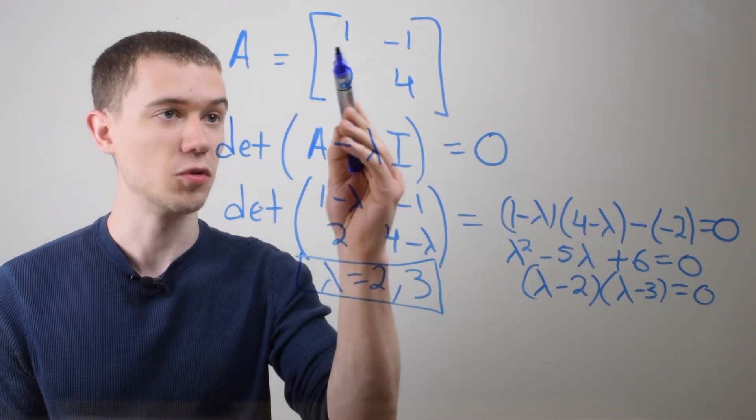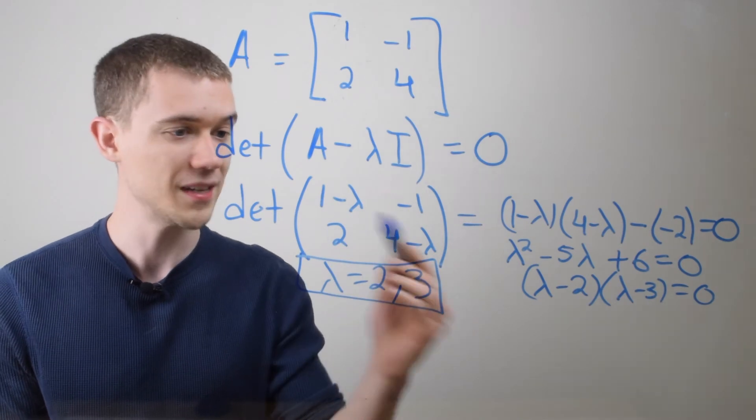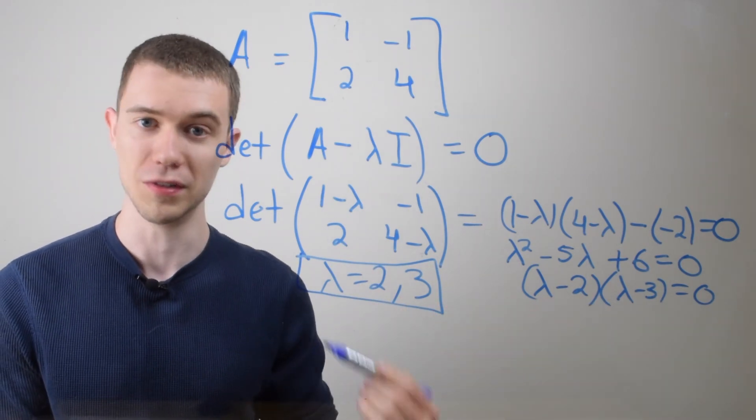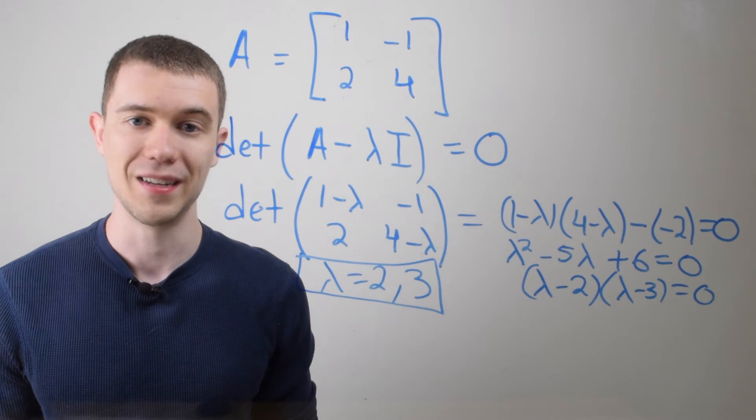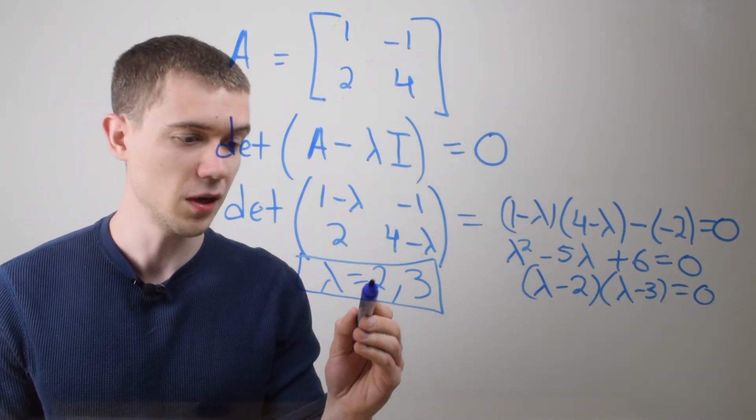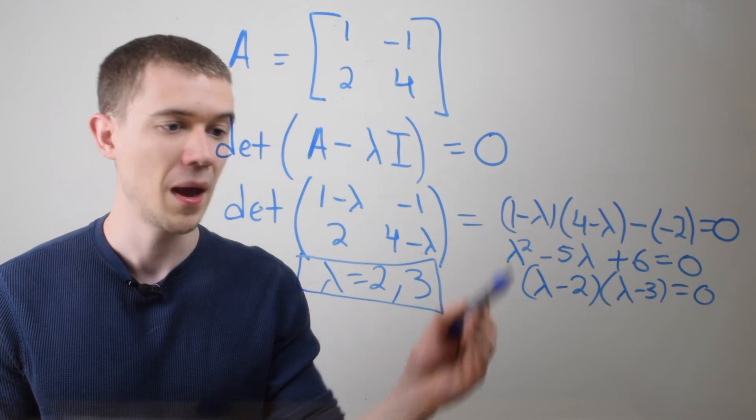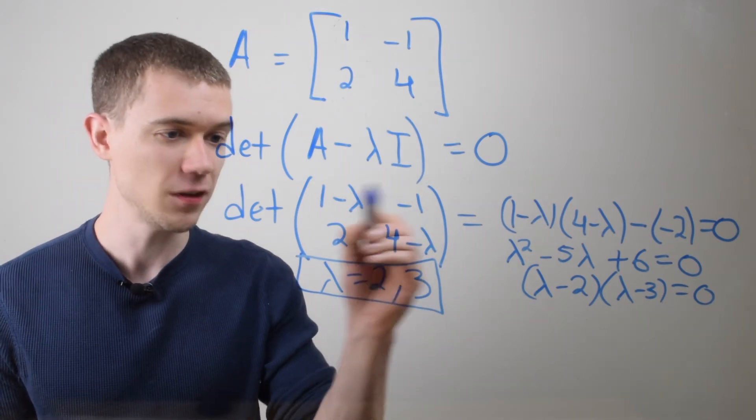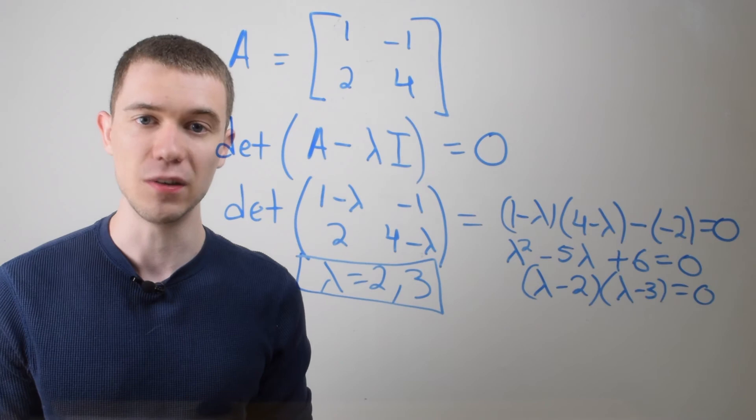So that's all you have to do. You just subtract lambda off the main diagonal, take the determinant, set it equal to zero and solve. Now if I want to find the eigenvectors associated with these eigenvalues, I'm gonna plug these two back into this matrix and set it equal to zero.